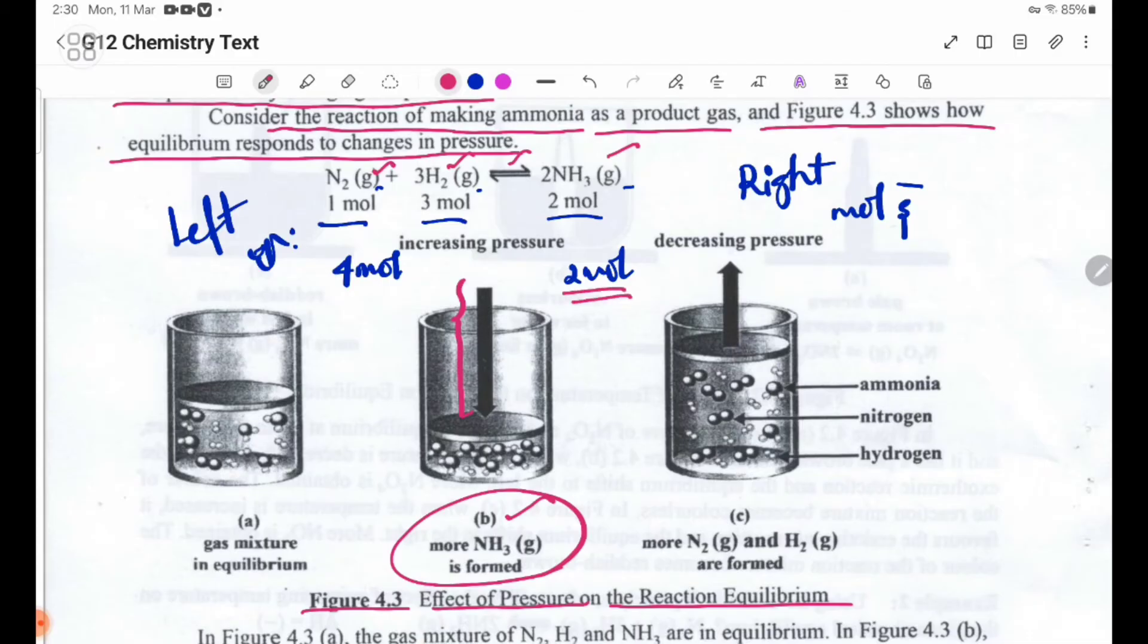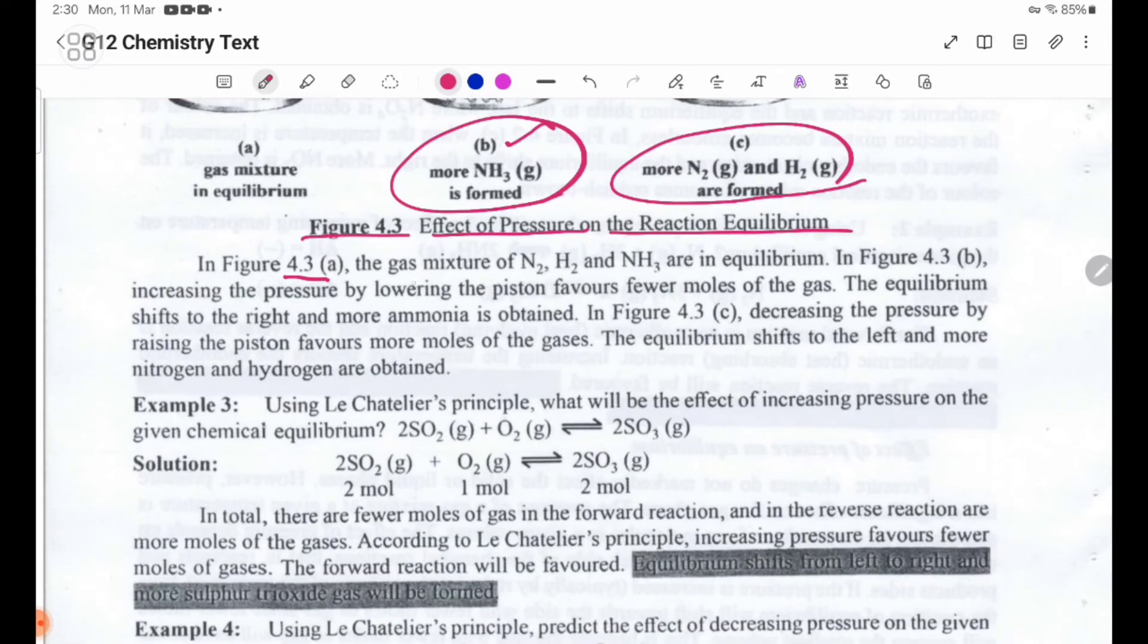Figure 4.3 shows the position of the piston in the same area. Equilibrium shifts toward the side with nitrogen and hydrogen on one side. In the case of 4.3a, gas mixture of N₂, H₂, and ammonia are in equilibrium. In the case of 4.3b, increasing the pressure.